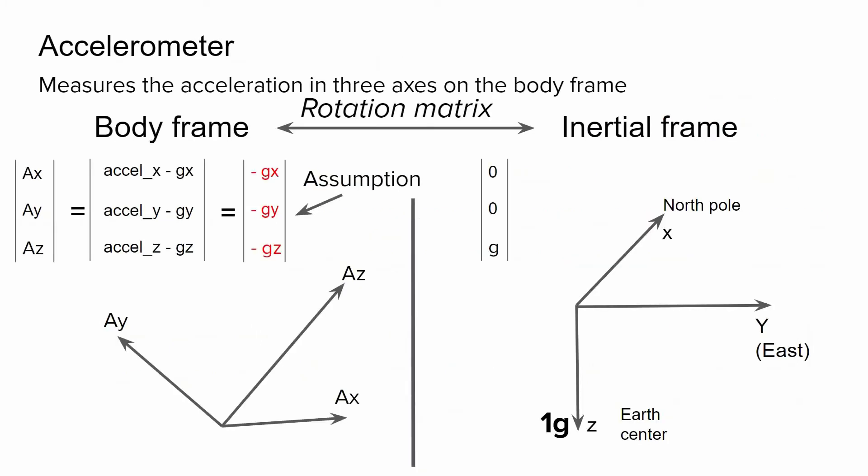An accelerometer is a sensor that measures the acceleration in three axes on the body frame. We also have gravity, a universal force acting everywhere. It means that we can denote the accelerometer readings in the following way: we have the acceleration in three axes minus the projection of the gravity force.